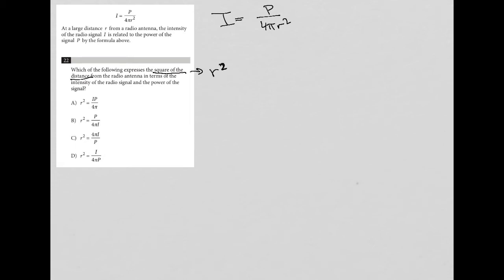Pretty much using my translate word problem skills on this, where I want to not just read the question all the way through and translate everything that I see. Which of the following expresses the square of the distance or r squared from the radio signal, and the power. Anytime I see in terms of, that means whatever was mentioned before in terms of on the left side of the equation, and then I have an equal sign and then whatever is mentioned after. So intensity and power must be on the right side.